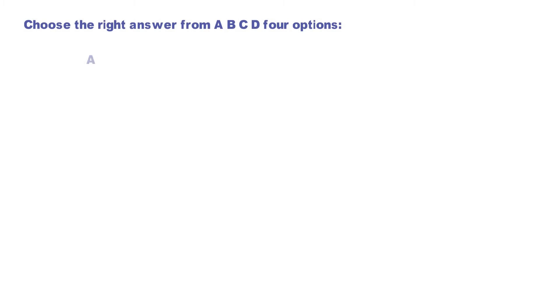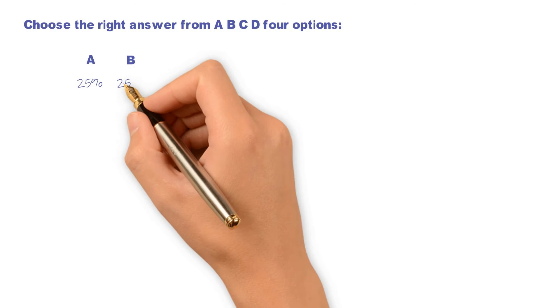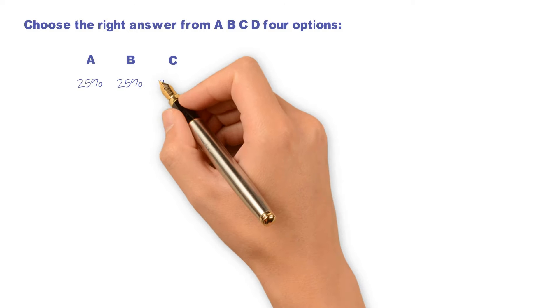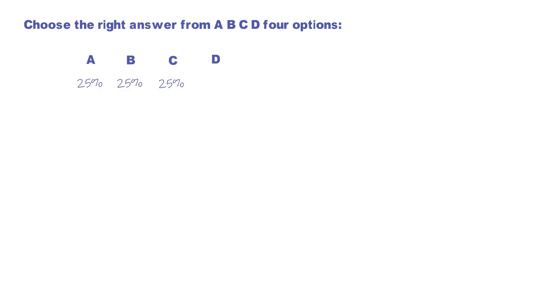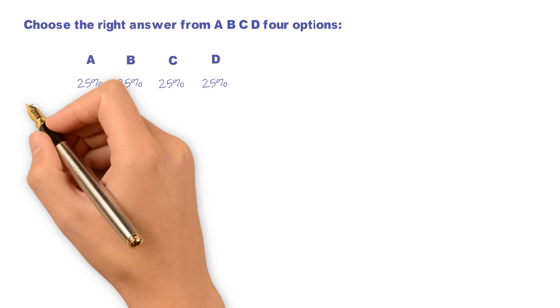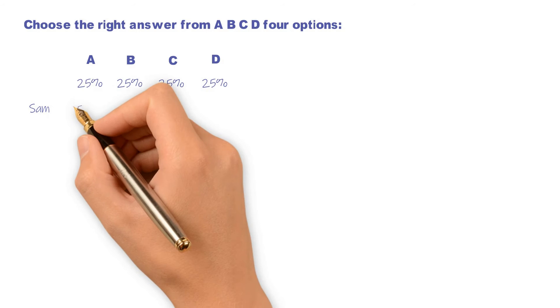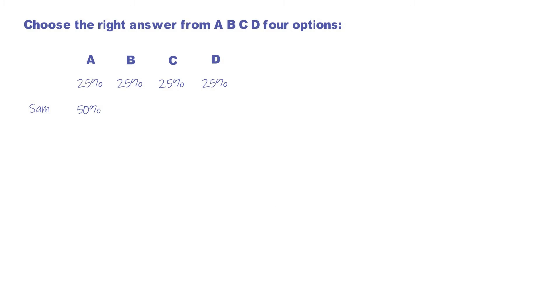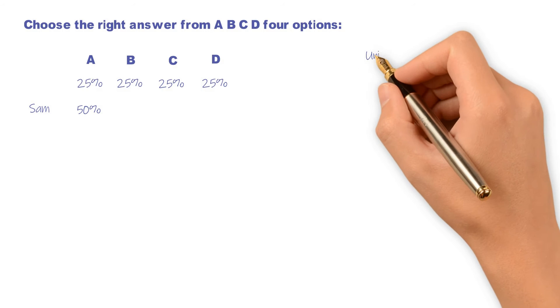Choose the right answer from A, B, C, and D, four options. Without any other information, we know each option has a 25% chance to be the right answer. Now someone tells you that option A has a 50% chance to be the right answer. How to calculate the amount of information of this piece of information?